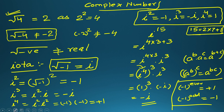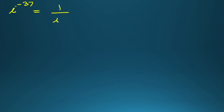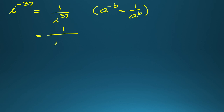Similarly, if we want to find i raised to the power minus 37, first we make the negative power positive: 1 over i to the power 37, using the property a to the power minus b equals 1 over a to the power b. Then we write 37 as 4 times 9 plus 1. So it becomes 1 over i to the power (4 times 9) times i, which using (a^b)^c equals a^(bc) becomes 1 over (i to the power 4) to the whole power 9, times i.